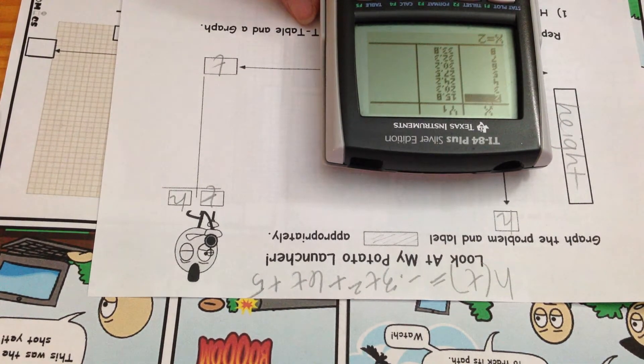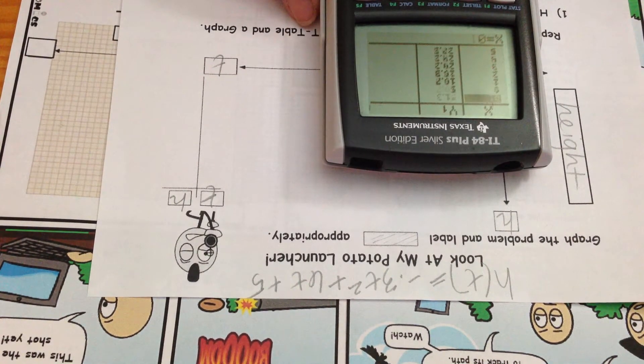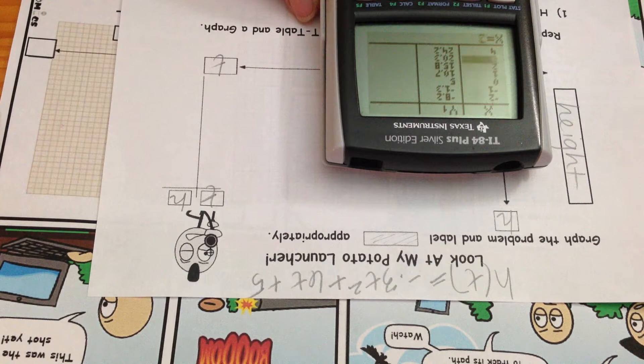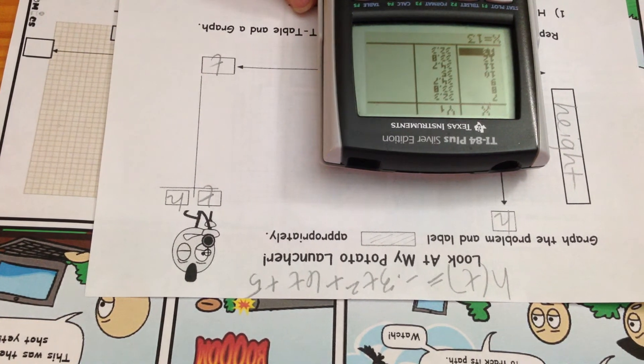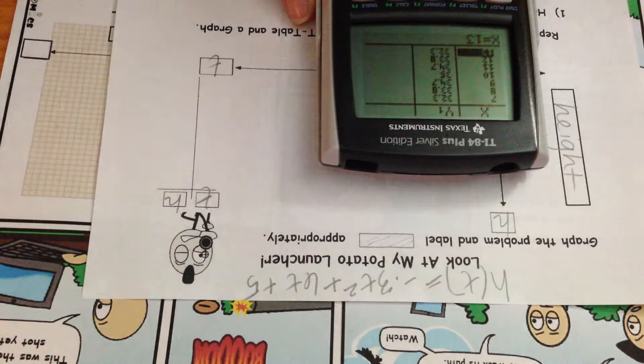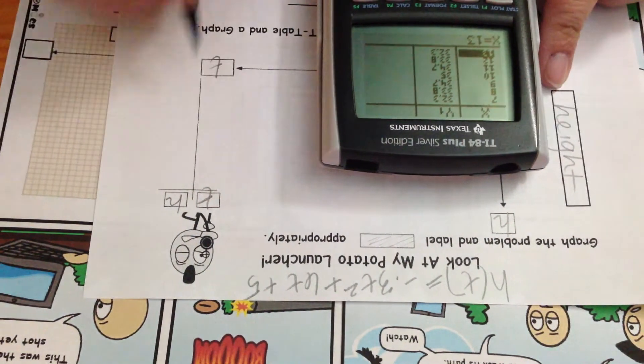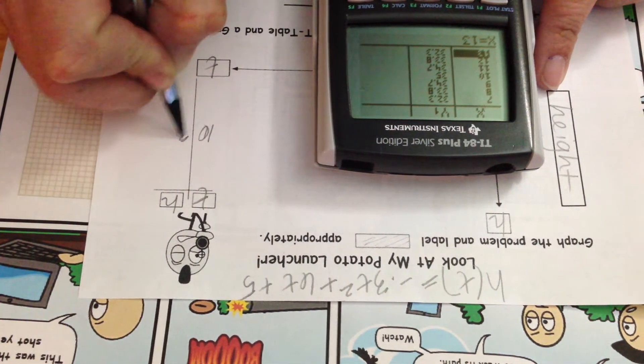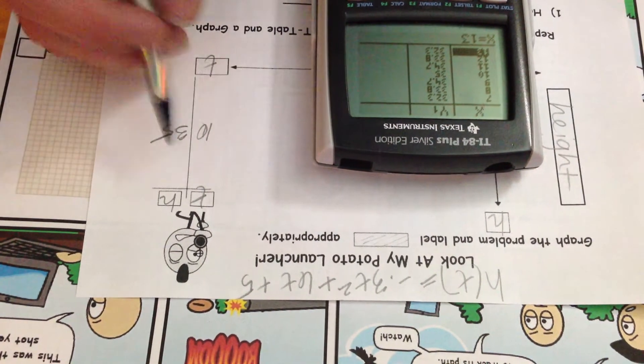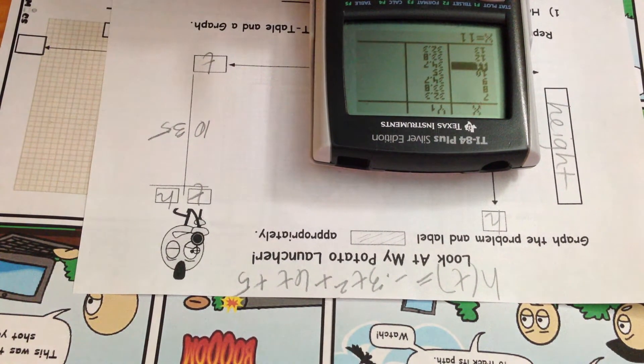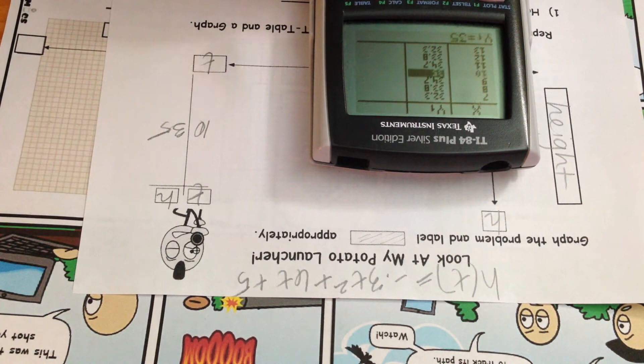So the potato launches upwards and it's going to be, I'm going to have a maximum. So I'm looking to find the highest point that the potato reaches. Found it. The vertex sits at 10 and 35. I'm going to put that in the middle of my table. There's a lot of values there going on. I wonder what I should do here. 10 and 35, there's my vertex.